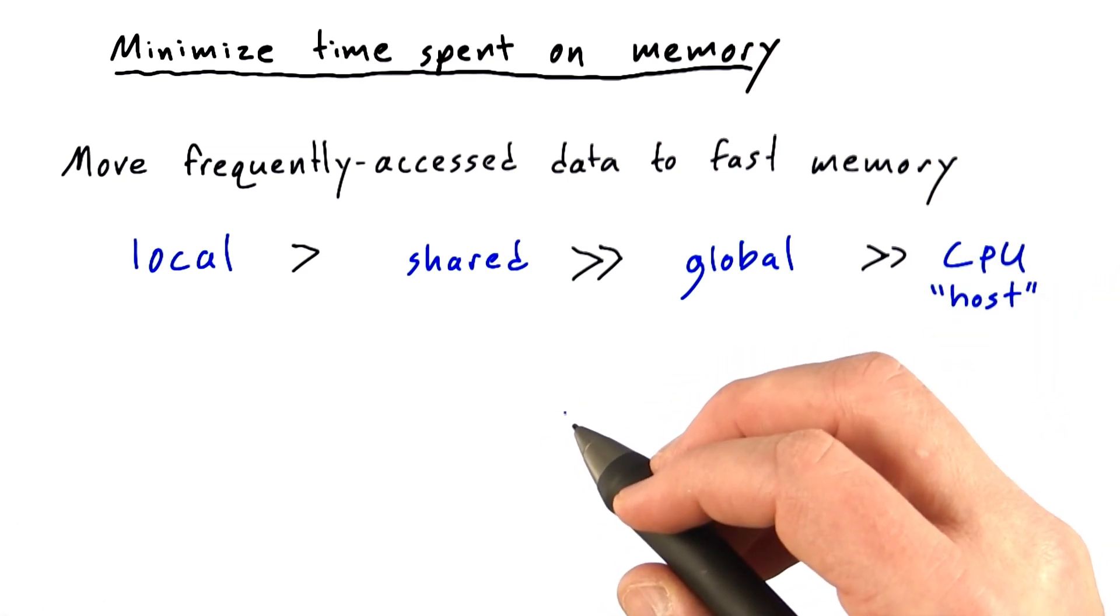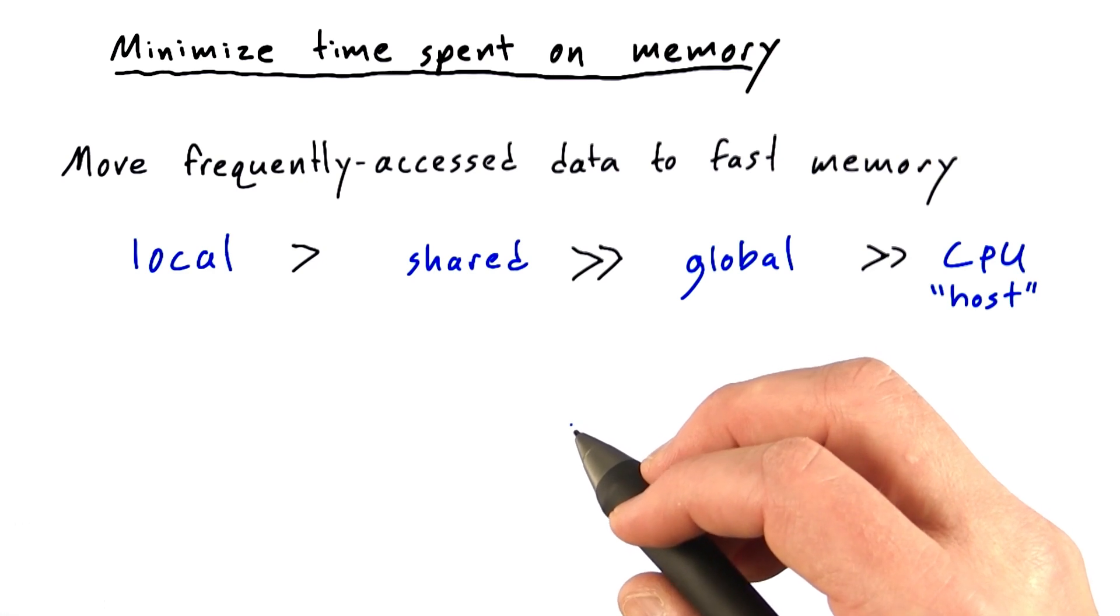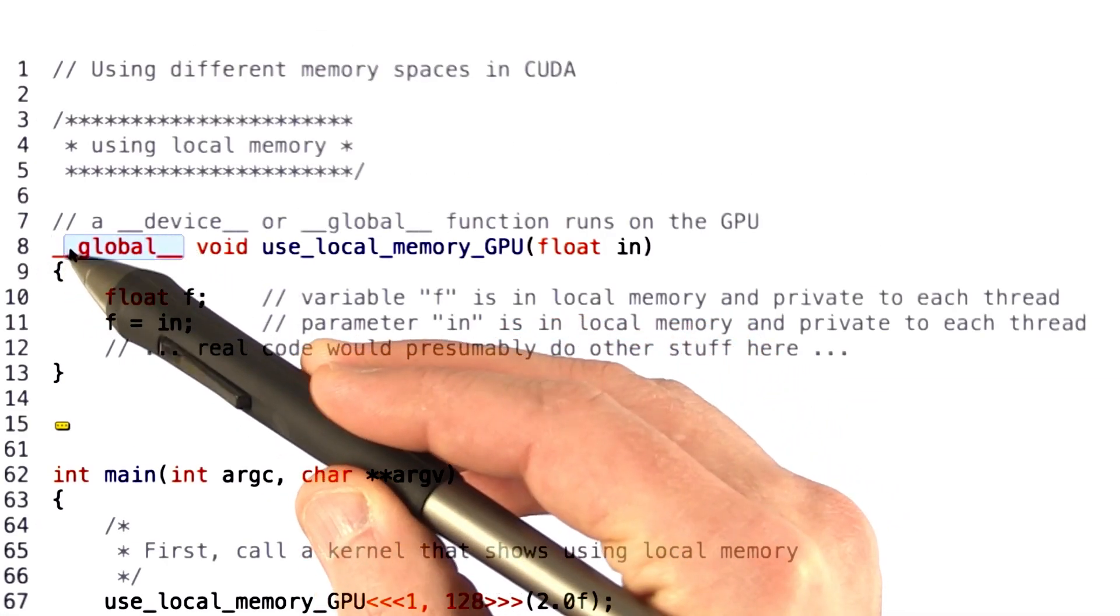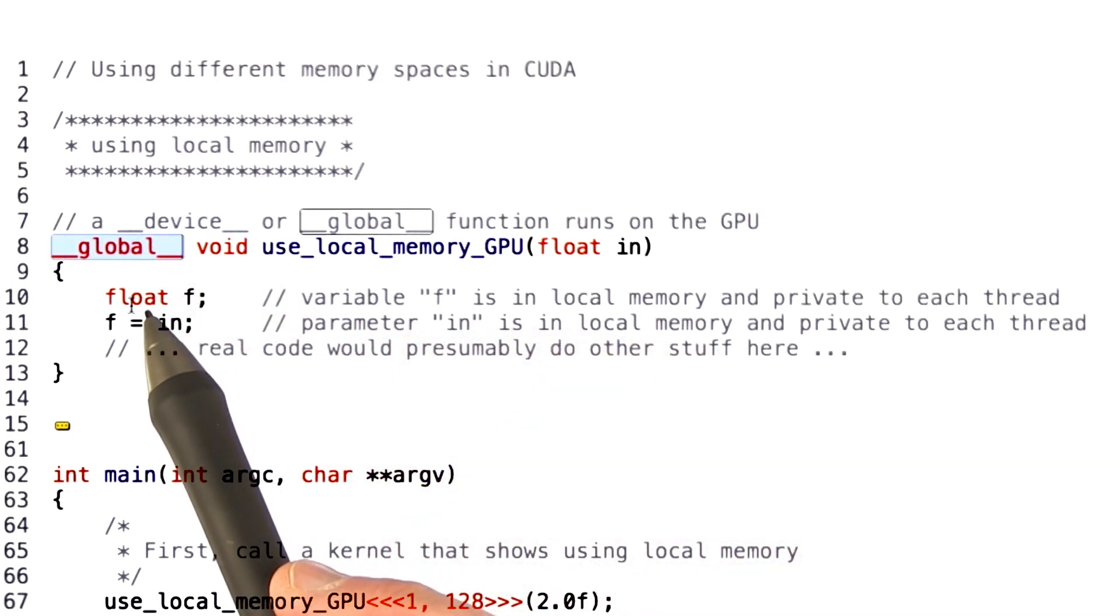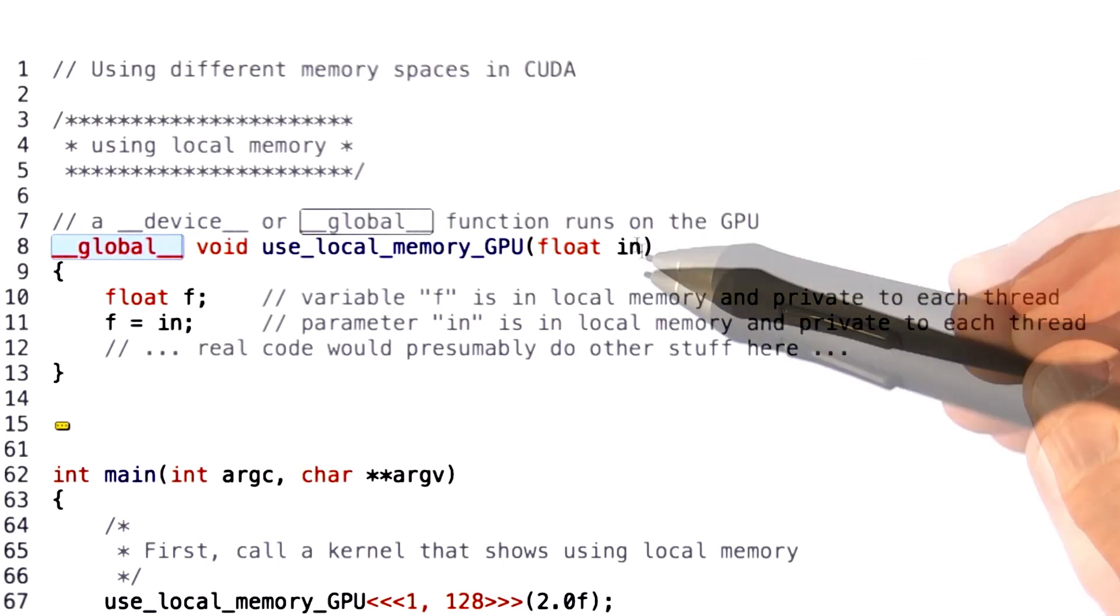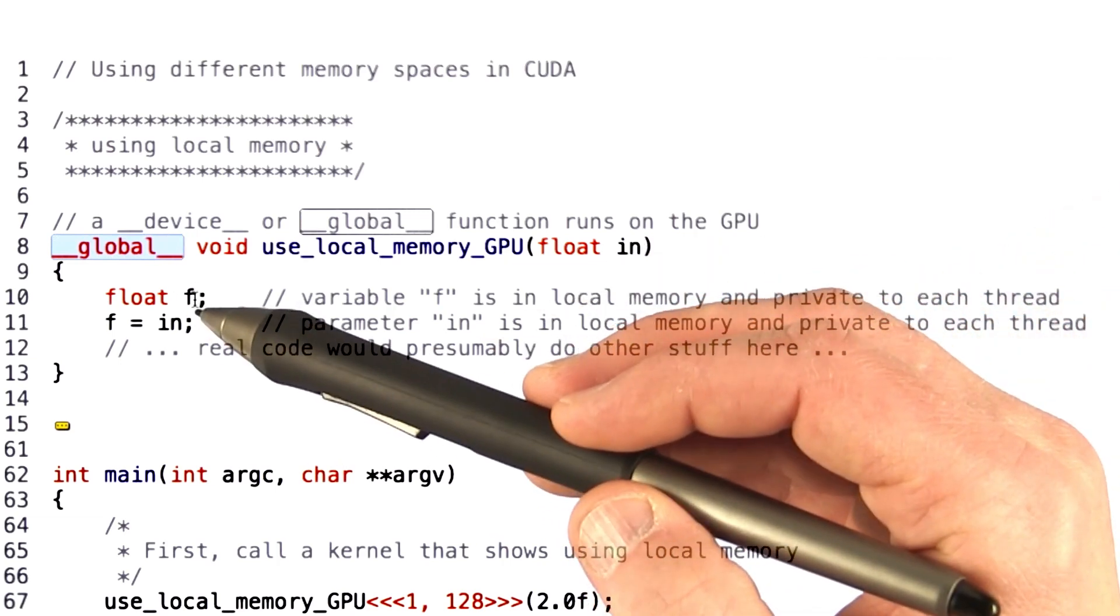So let's see an example of using local, shared, and global memory. Here's a kernel. I know that it's a kernel because it starts with either device or global. It's called useLocalMemoryGPU. It has one parameter called n, and it's got one local variable called f.